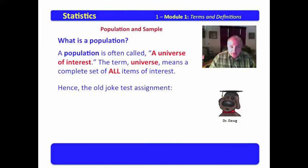Now, hence the old joke test assignment, which was to define the universe and provide three examples. If you face this question on a statistics test, universe just means the group of interest. But if you face this on a literature test, you're in trouble.